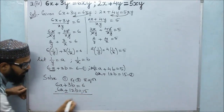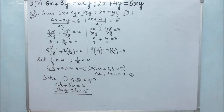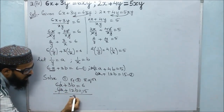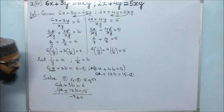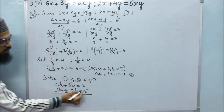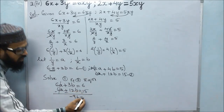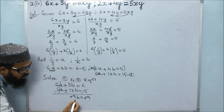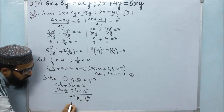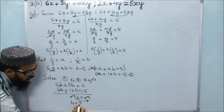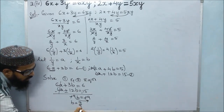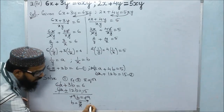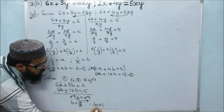Subtracting the first from the second, signs are changed to minus, minus, minus. The 6A terms cancel. Minus 12B plus 3B gives minus 9B equals 15 minus 6 which is minus 9. The negatives cancel, giving 9B equals 9, so therefore B is equals to 1.